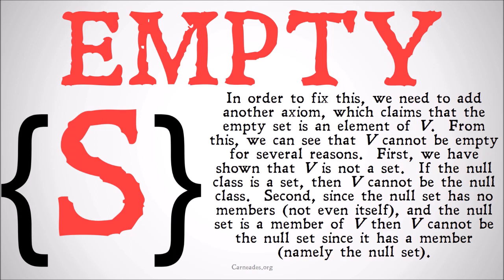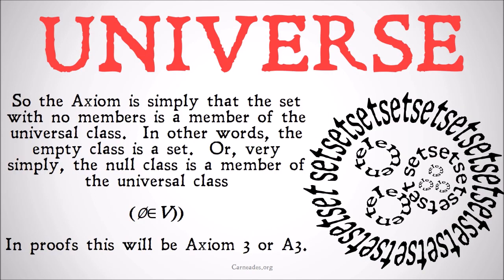From this we can see that V cannot be empty for several reasons. First, we have shown that V is not a set. If the null class is a set by being a member of V, then V can't be the null class, because the null class isn't just a class — it's a set as well, and V has to be a class but not a set. Second, since the null set has no members — not even itself — and the null set is a member of V, then V can't be the null set since it has at least one member, namely the null set. So the axiom is simply that the set with no members is a member of the universal class, or in other words, the empty class is a set, or the null class is a member of the universal class.